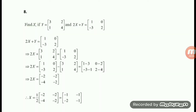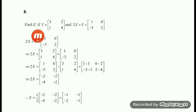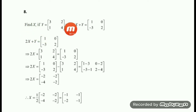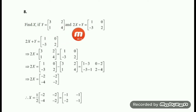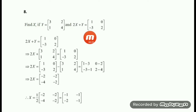Hello student. Today we will do question number 8 of exercise 3.2. Your question is: find X if Y is equal to first row [3, 2], second row [1, 4], and 2X plus Y equal to first row [1, 0] and second row [-3, 2].